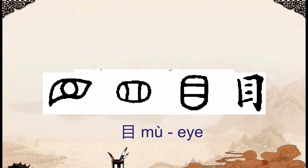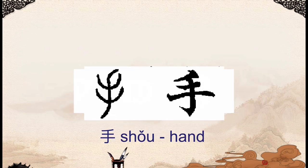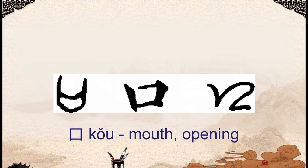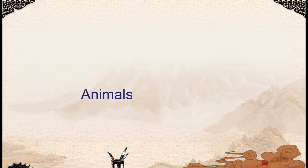The character 目 means eye — this is an old-fashioned word for eye. Originally it was a picture of an eye, but now it's actually turned on its side in the modern Chinese version. This isn't the most common word for eye in Chinese; normally eye would be 眼睛. 手 means hand, and this was originally a picture of a hand or a very stylized drawing of a hand. 口 means mouth or opening — as you can see, it looks like a mouth.